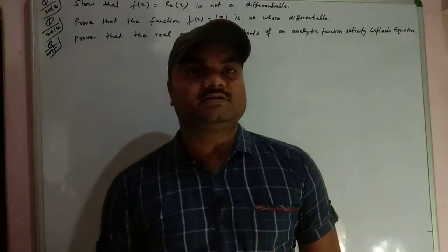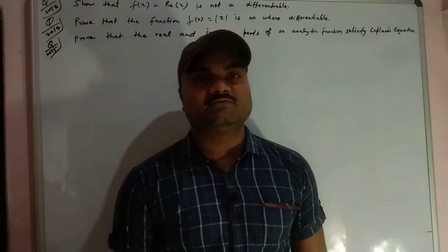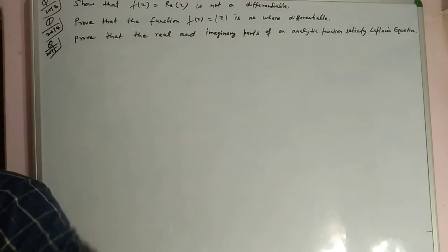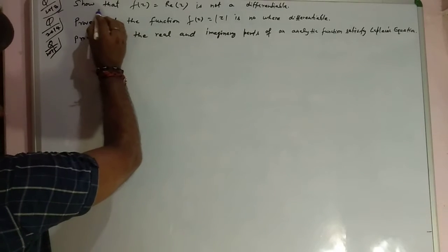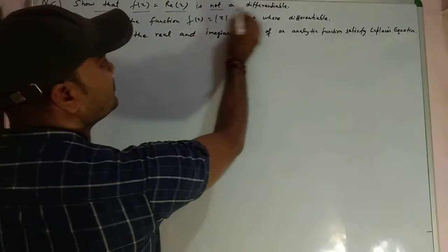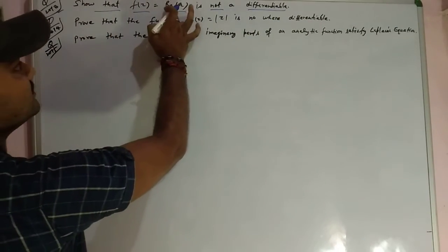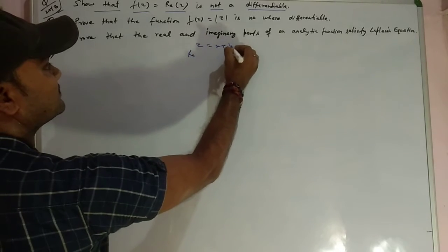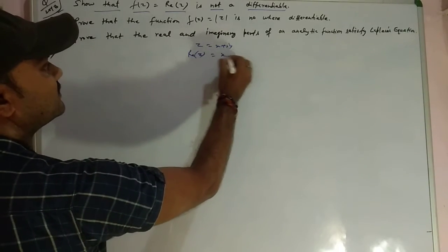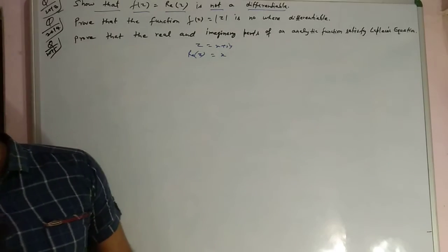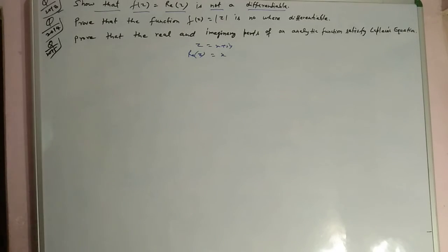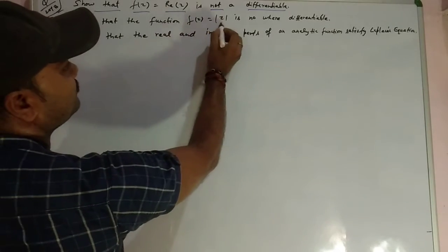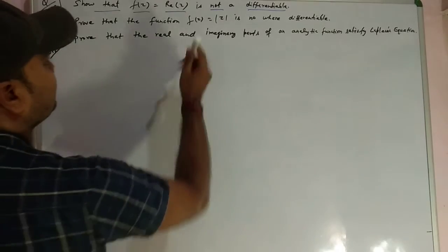Hello everyone, welcome to my channel Learning Institute. Today I am going to discuss some problems on the Cauchy-Riemann equation. There are three questions. First, f(z) equal to Re(z) is not differentiable. Re(z) means if z = x + iy, then the real part is simply x. Also, f(z) = |z| is nowhere differentiable.